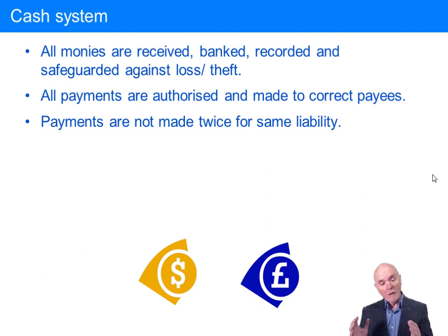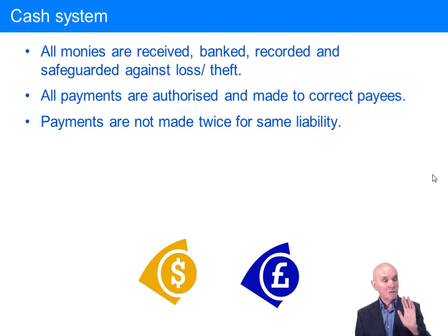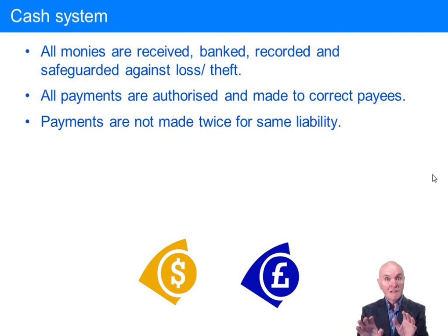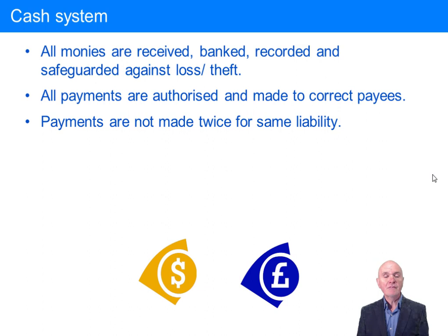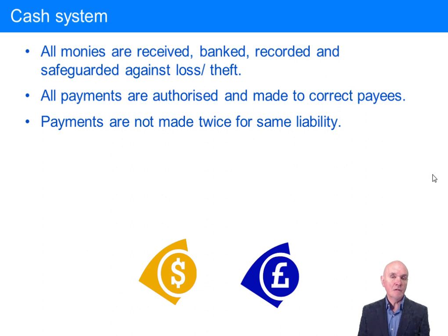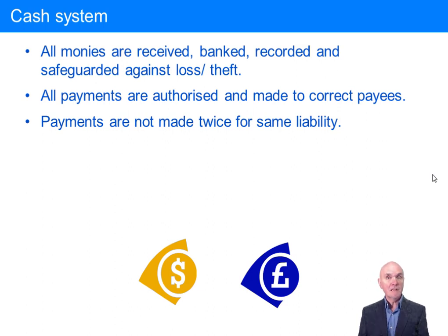For the cash system, we have dealt with quite a bit of it already in the purchases and sales systems — purchases usually ends up with cash going out, sales we hope ends up with cash coming in. All I will say here is that we have to make sure monies are banked quickly to safeguard against theft or loss. Also, the more money you have in a bank, perhaps the less overdraft interest you're paying, and you get a better picture of your cash flow position rather than money sitting around in random places.